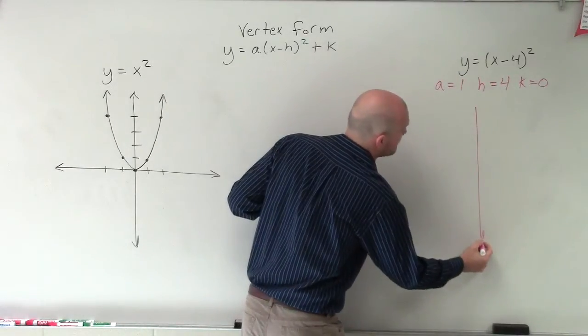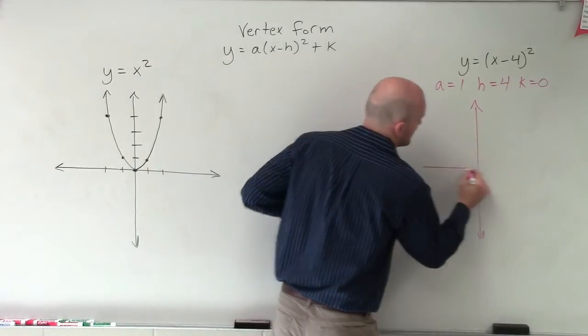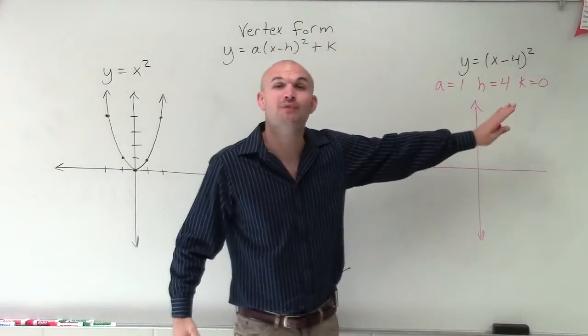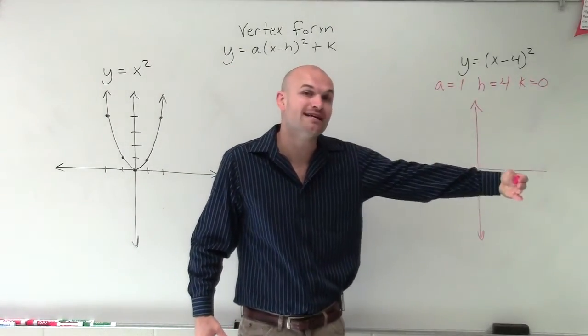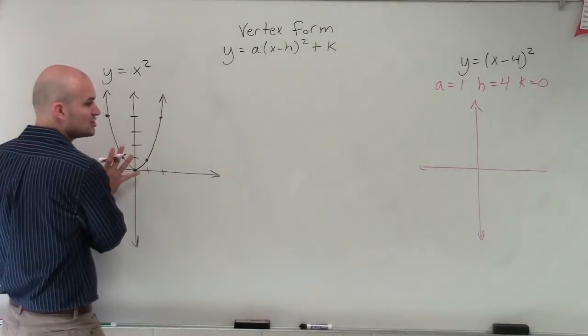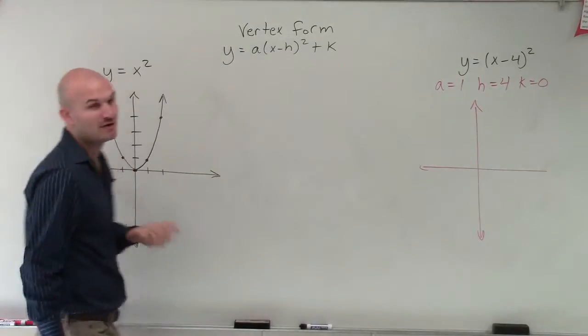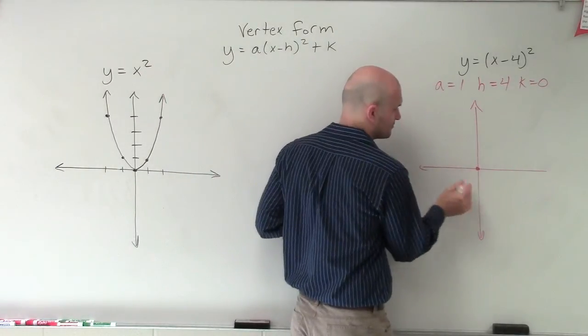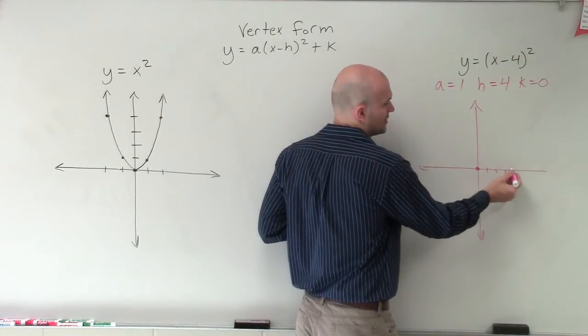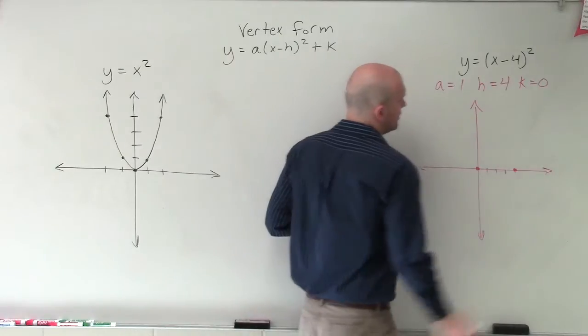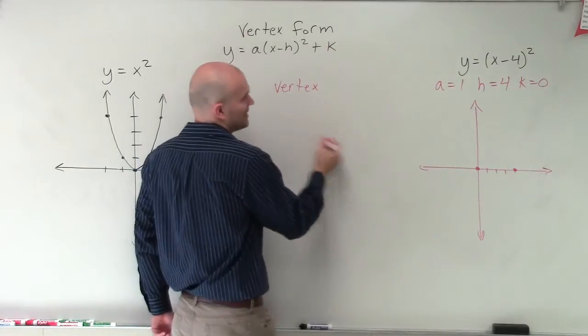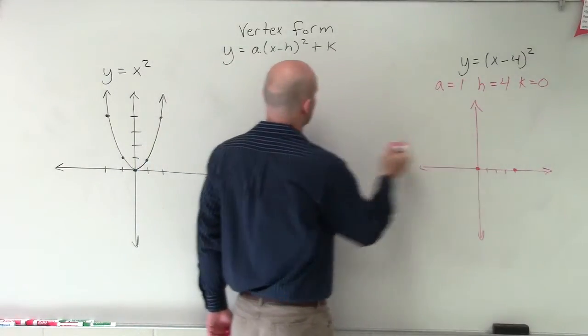So when it comes to graphing, that's going to become very important because when I look at this graph, h, remember, shifts the graph left or right. So since my h is positive 4, I'm going to shift it to the right 4 units. So I need to take this graph and simply shift the graph over 4 units. So the first point I always like to shift over is the vertex. The vertex was originally at 0, 0. Now I'm just going to move it over 4 units. 1, 2, 3, 4. OK, so now that's my new vertex. So we could say the vertex of this problem is going to be at 4 comma 0.